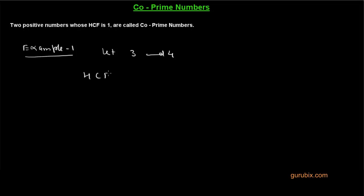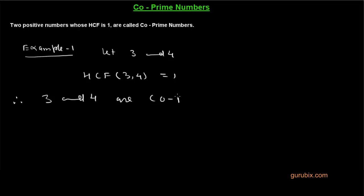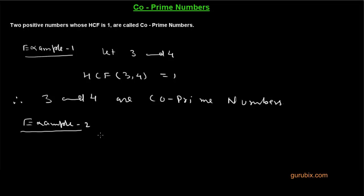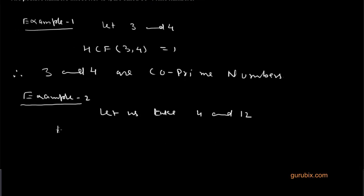The HCF of three and four equals one, therefore three and four are co-prime numbers. Let me take another example. Example two: let us take four and 12. What do you see here?